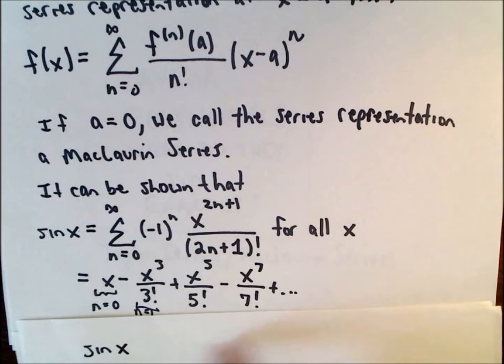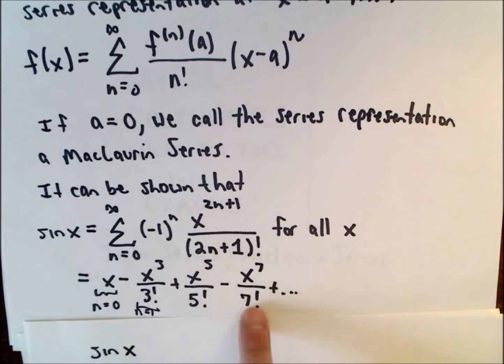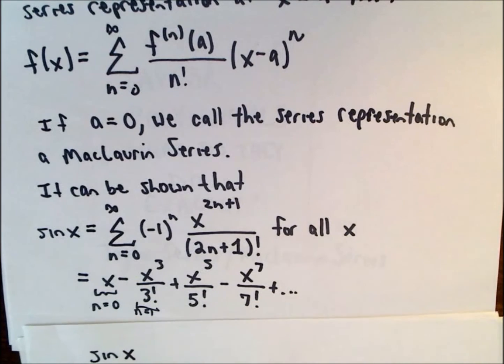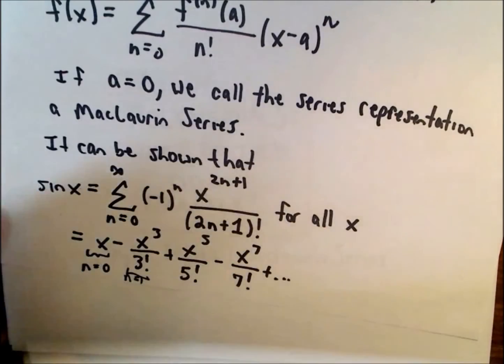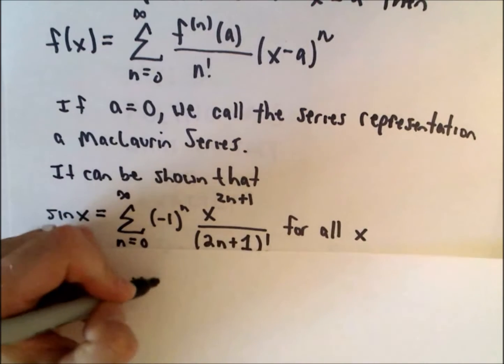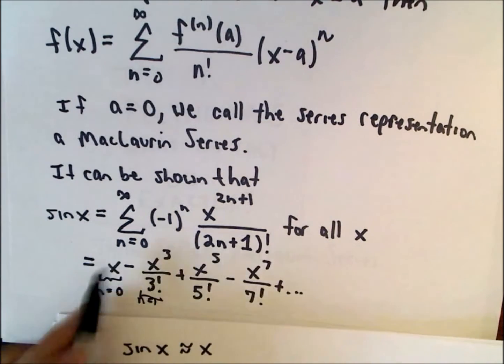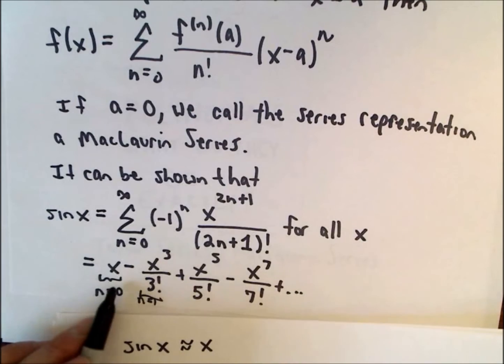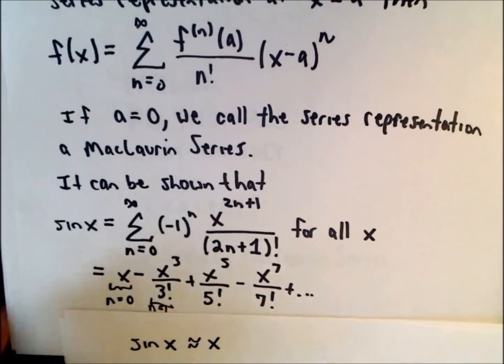So the idea is again it says that sine x can be approximated using this Taylor polynomial. This would be the infinite Taylor polynomial. The more terms that you use here, the better the approximation is going to be. So you could do a really crude approximation by saying sine x is roughly equal to x.